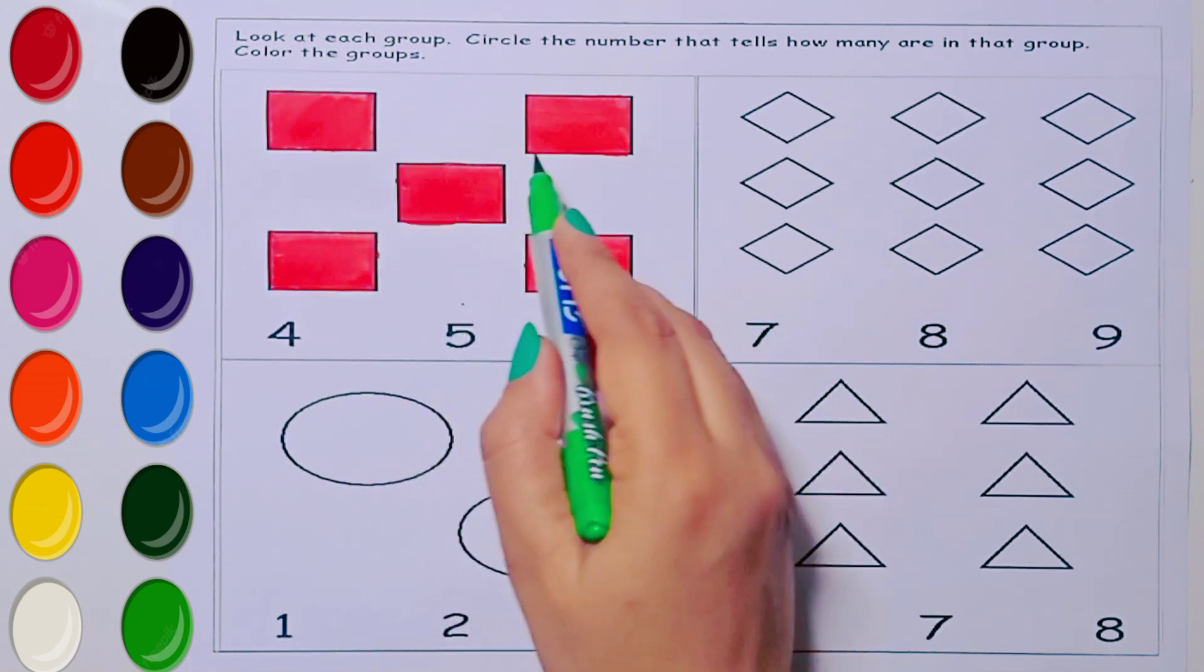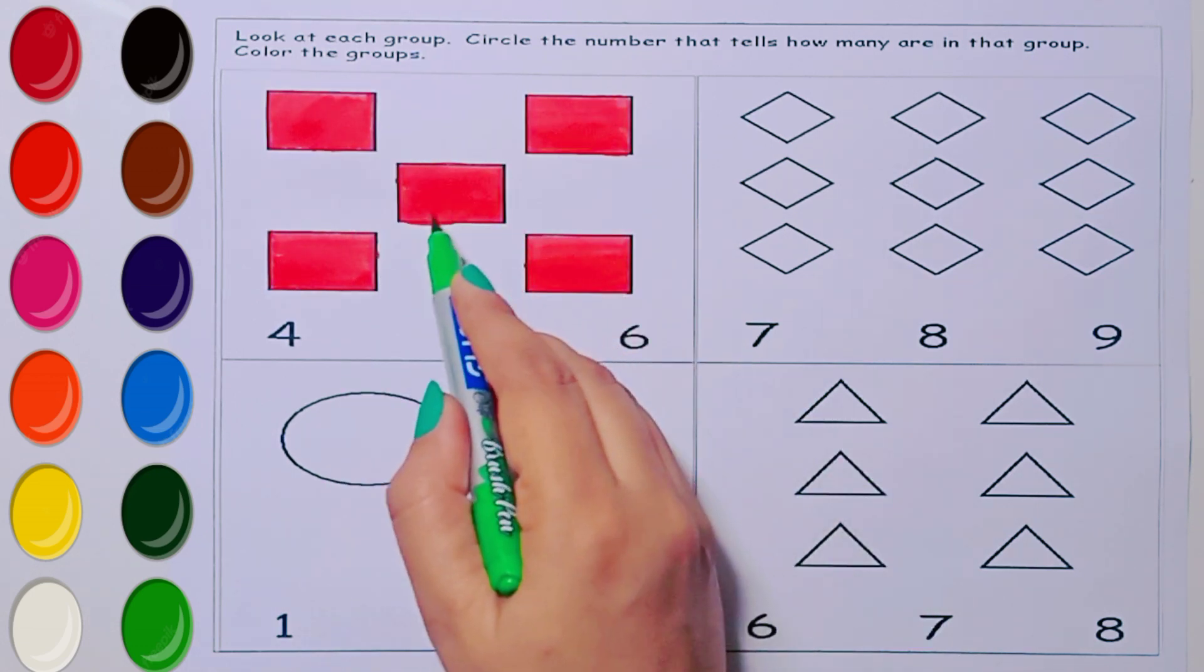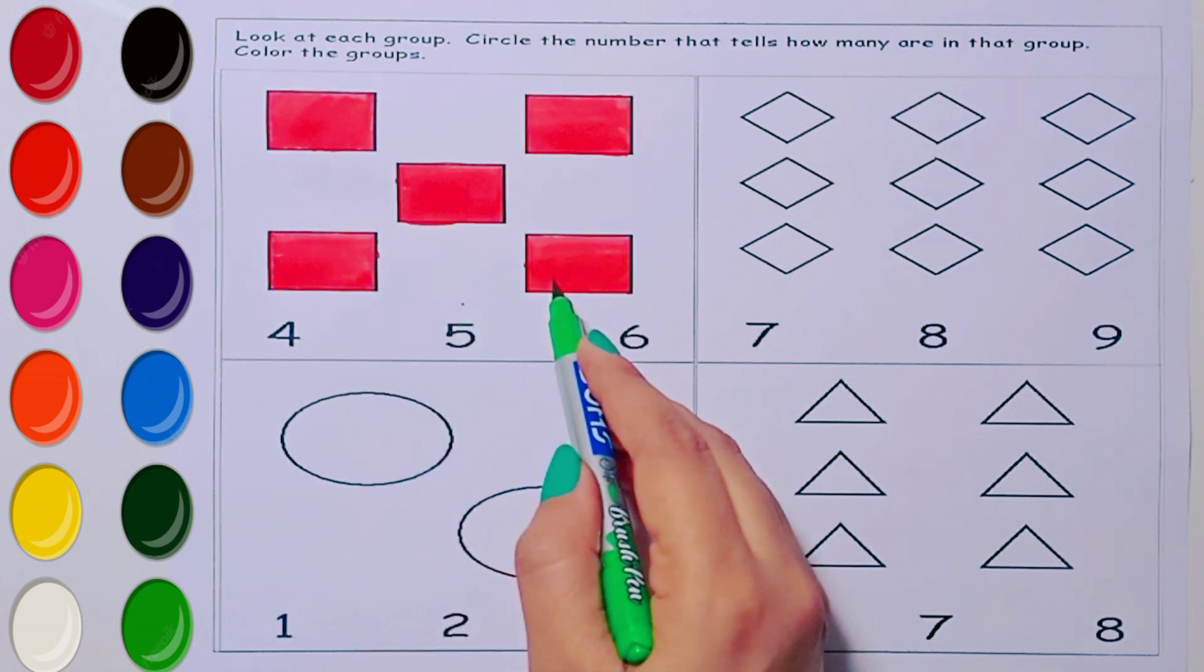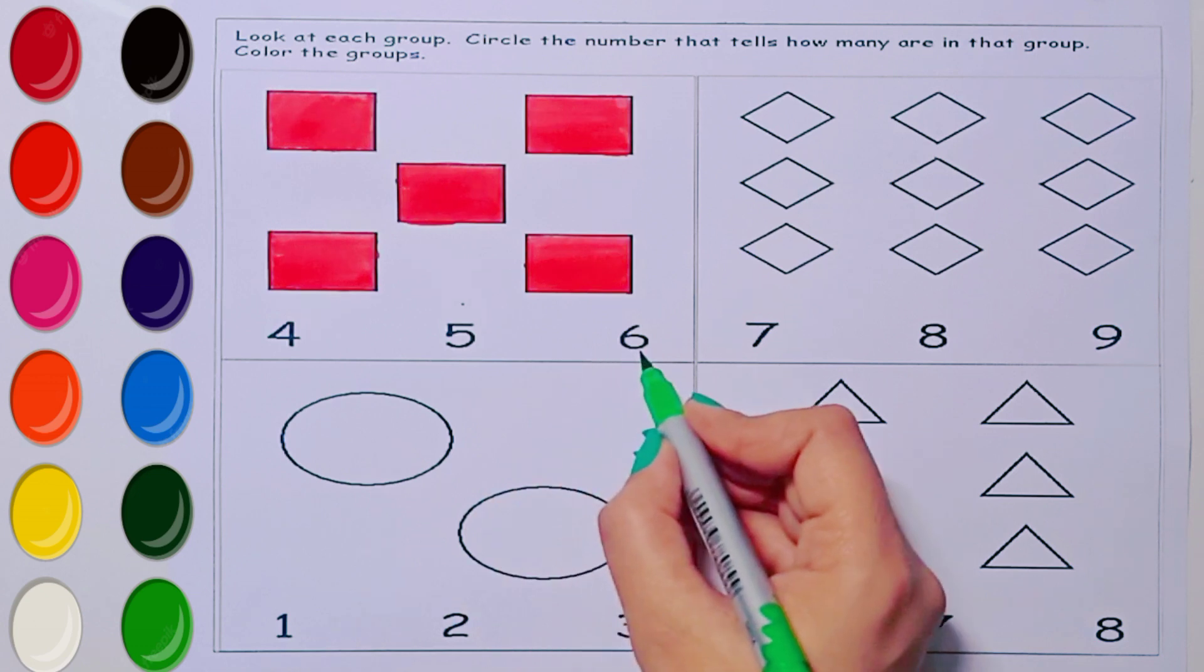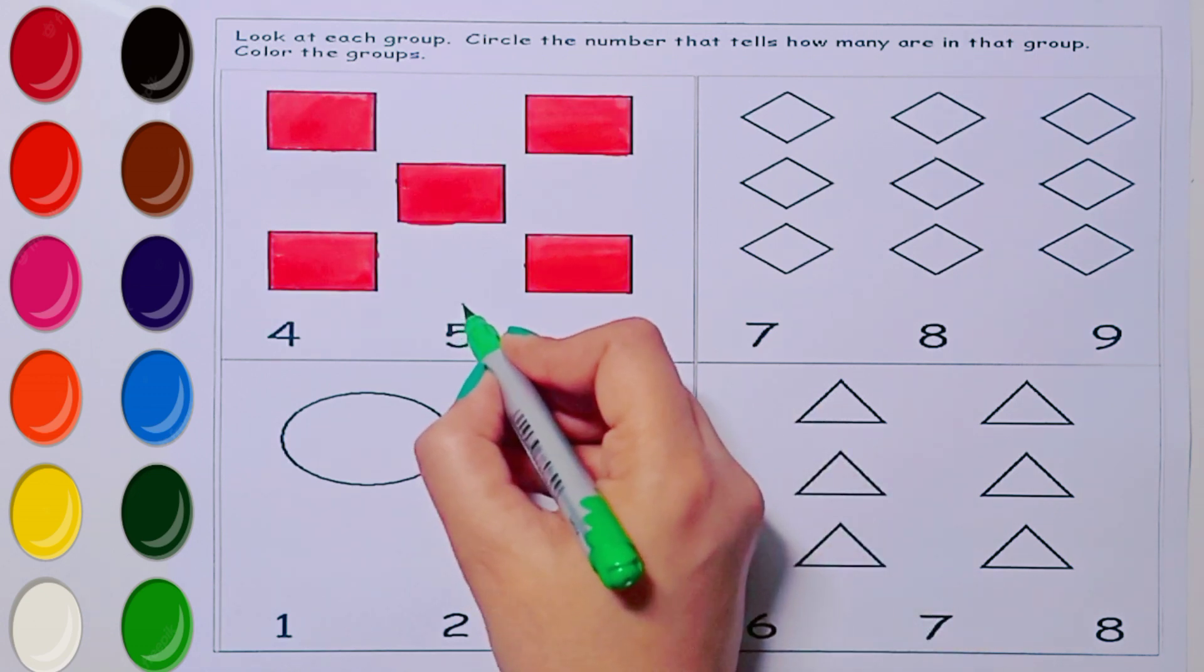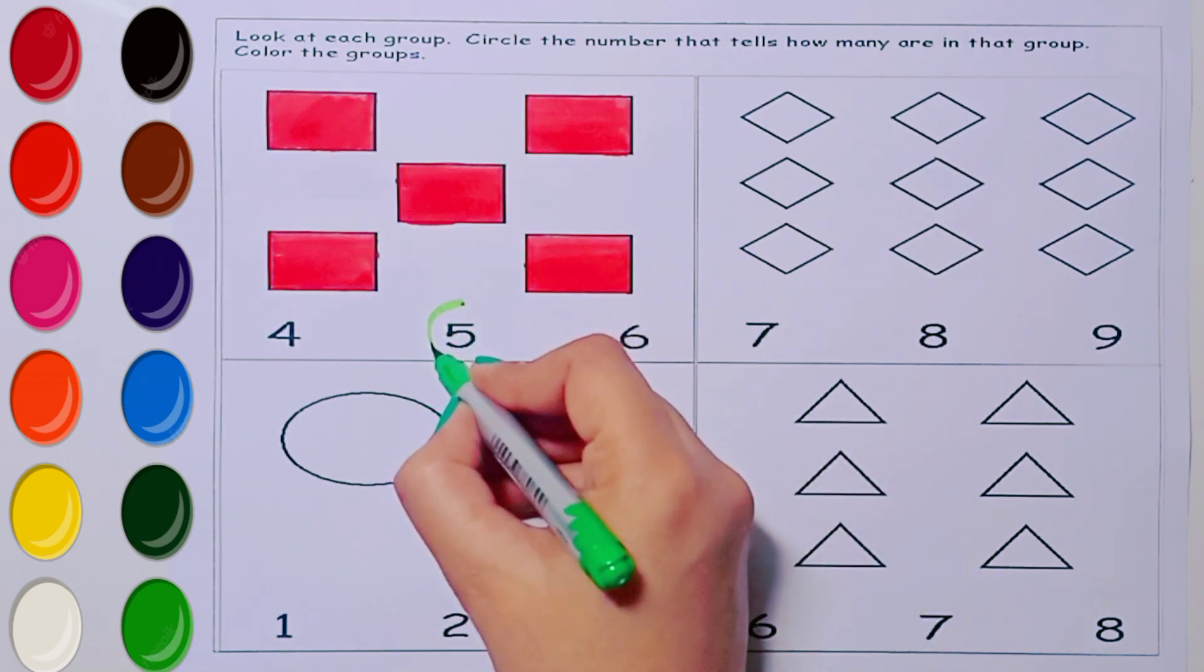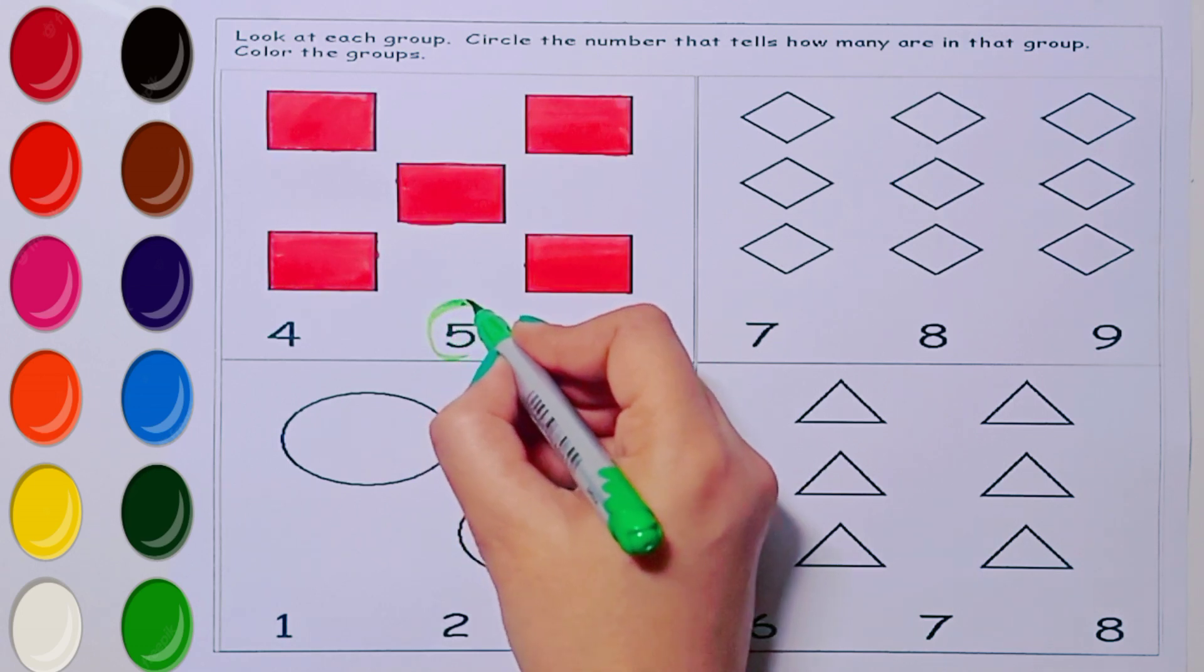Let's start counting. 1, 2, 3, 4, 5. Where is 5? 4, 5, 6. Yes. 5 is here. Yay!